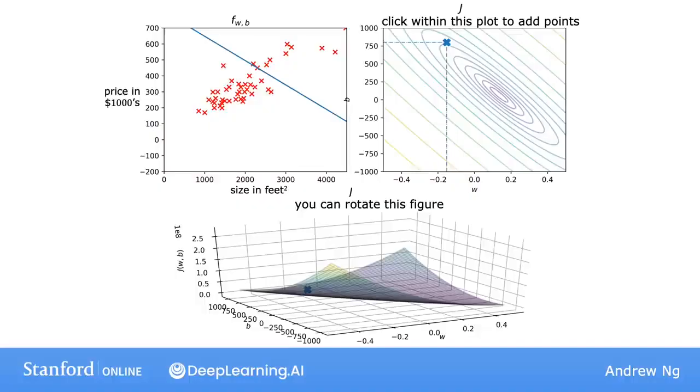Let's look at some more visualizations of w and b. Here's one example. Over here, you have a particular point on the graph j. For this point, w equals about negative 0.15 and b equals about 800.